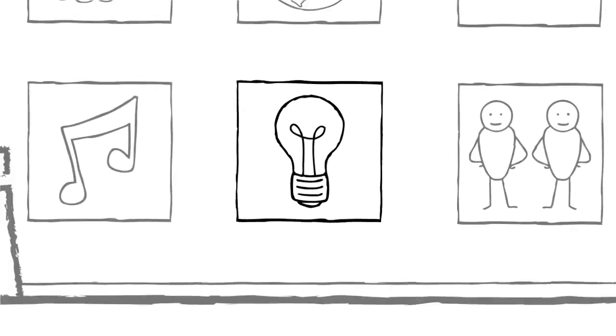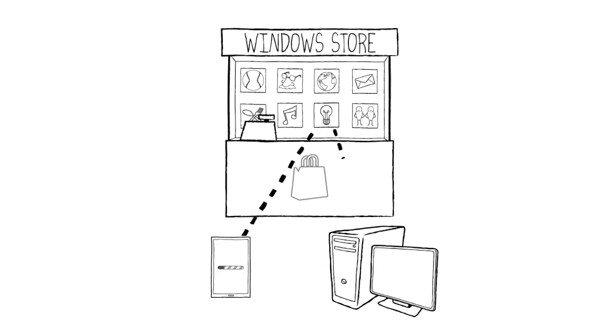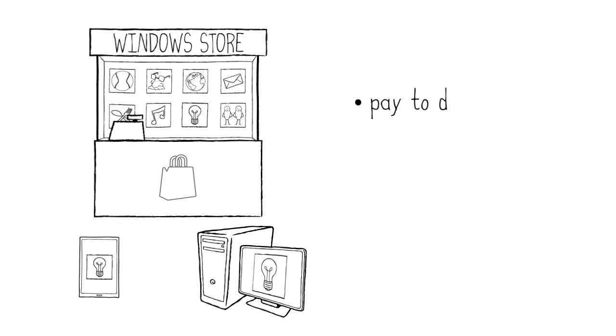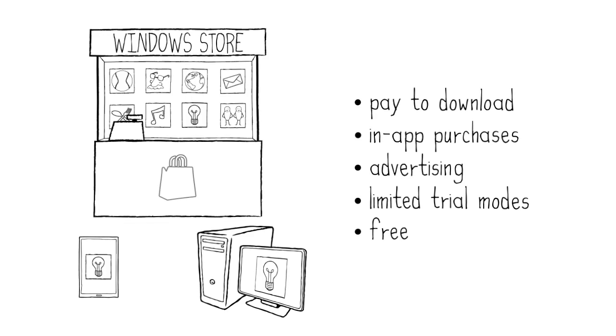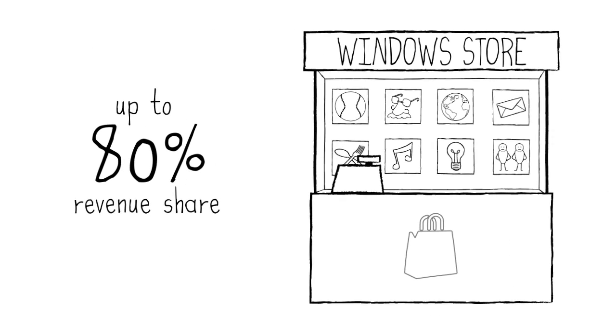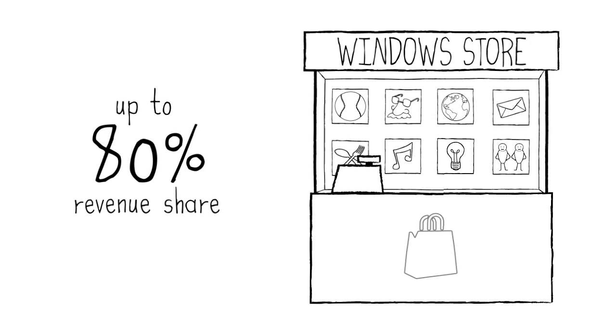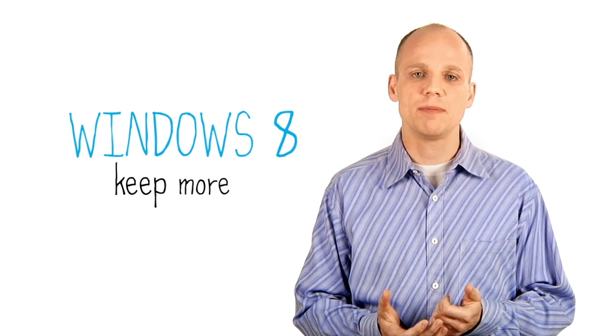Windows 8 apps can be distributed through the Windows Store, and you have a choice of business models. You can offer your app using pay-to-download, in-app purchases, advertising, time and feature limited trial modes, or for free. You get to keep up to 80% of the revenue share when you're using the Windows Store commerce platform to handle payments. Or you can work with your own commerce platform provider, completely independent of the Windows Store — it's up to you. With Windows 8, you can earn more and keep more.